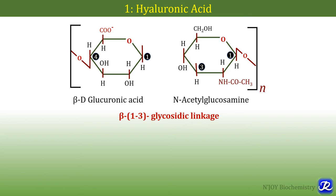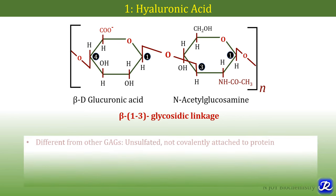The first GAG is hyaluronic acid. Its composition consists of a repeating disaccharide unit made up of glucuronic acid and N-acetylglucosamine, both linked together by a beta-1,3 glycosidic linkage. Hyaluronic acid is different from other GAGs because it is unsulfated — no sulfate group is added to the N-acetylglucosamine — and it is not covalently attached to protein. All other glycosaminoglycans are attached covalently, but hyaluronic acid is attached non-covalently.